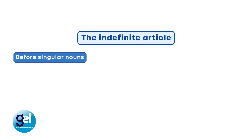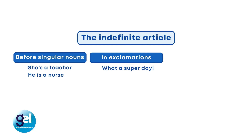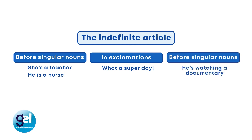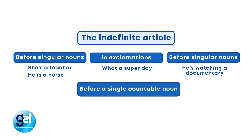From the definite article we're now going to focus on the indefinite article — and this is when we use a or an before singular nouns. She's a teacher, he's a nurse — with occupations. In exclamations: what a super day. We use it before singular nouns: he's watching a documentary. And before a single countable noun that we're referring to for the first time: there's a new film on the television tonight. Again, language transfer is important to consider — many students do not have articles in their own language, so they will find it difficult to use the indefinite article.